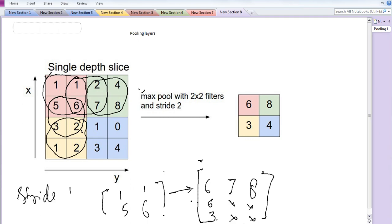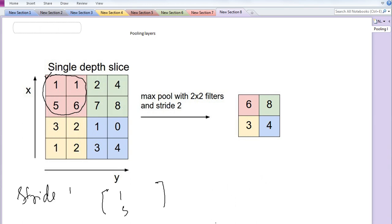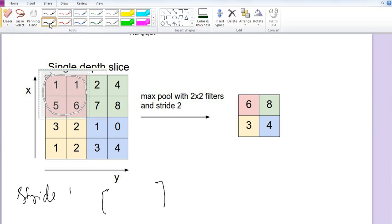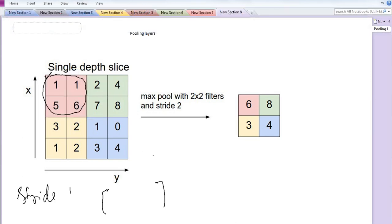This is stride 1. If you use a 3x3 filter, then when you're using a 3x3 filter, you will be taking at a time a matrix like this one.